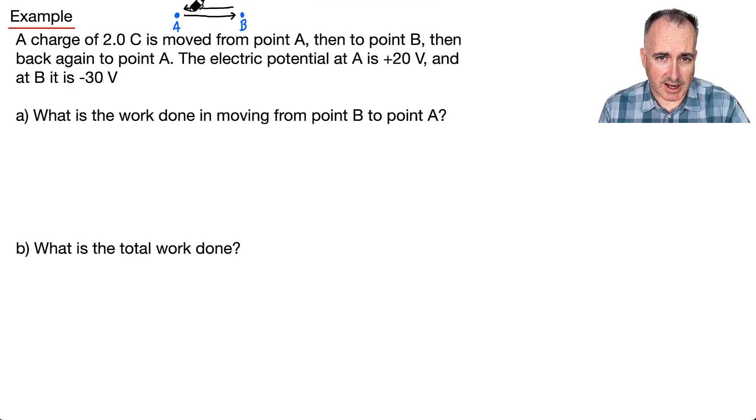Now, we know the electric potential at A is going to be plus 20. So what is this? This is VE here. That's plus 20 at A, and then at B, it's going to be minus 30. So what's the work done? It helps to know, first of all, what's the equation for work done. It goes W equals Q times delta VE. That's the equation we're going to need.